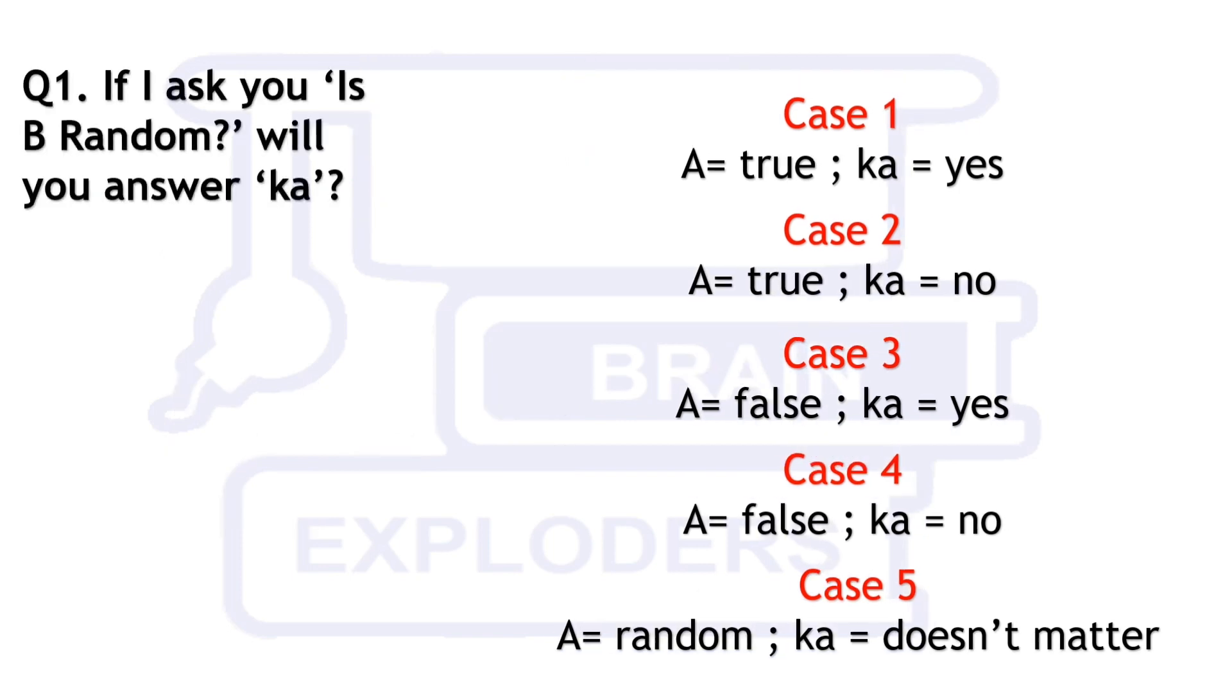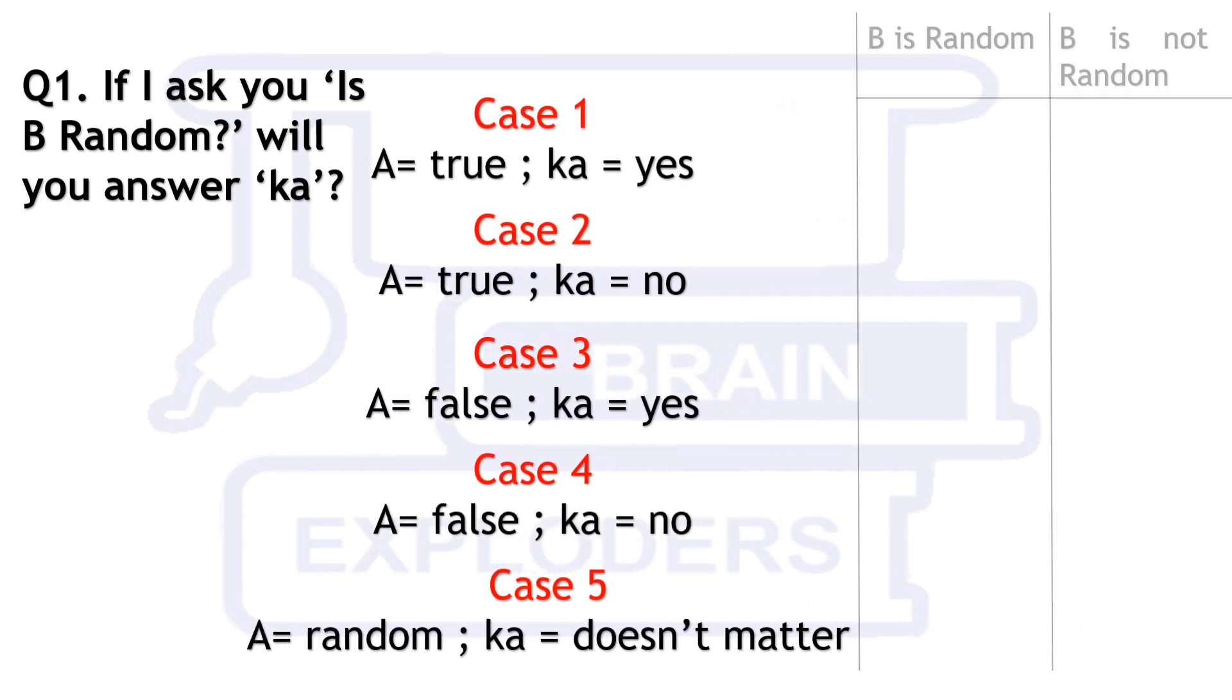Again there are two possibilities that B is random or not. Accordingly a table of replies is given on the screen which you can check yourself.